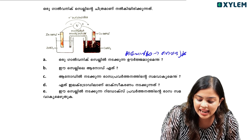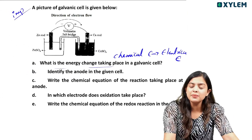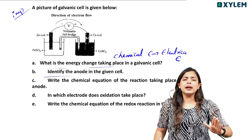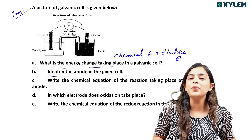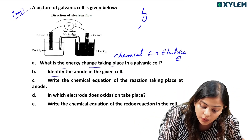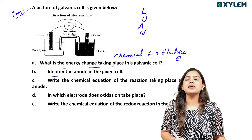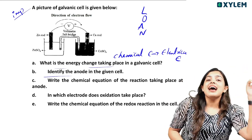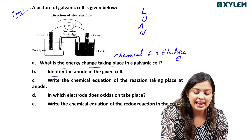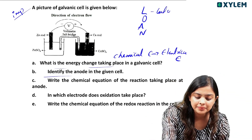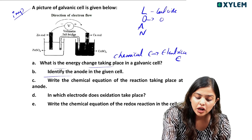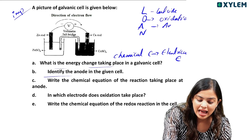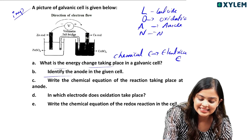The next question is: identify the anode. Anode is on the left side — oxidation takes place at the anode. Left side: oxidation. Anode is negative. L for left side, O for oxidation, A for anode negative.